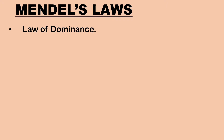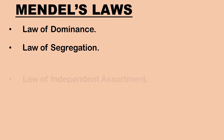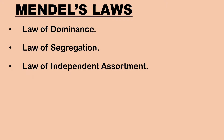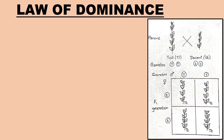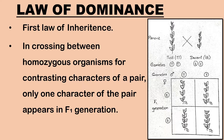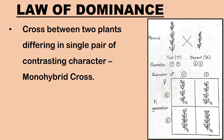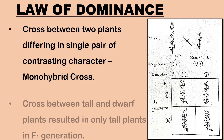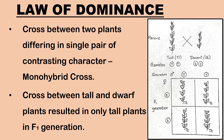On the basis of the results obtained through his hybridization experiments, Mendel formulated three laws: law of dominance, law of segregation, and law of independent assortment. Law of dominance is the first law of inheritance. It states that in crossing between pure homozygous organisms for contrasting characters of a pair, only one character of the pair appears in the first filial generation. The cross between pea plants differing in a single pair of contrasting characters is known as monohybrid cross. Mendel made a monohybrid cross between tall and dwarf pea plants. In the first filial generation, only tall plants appeared.